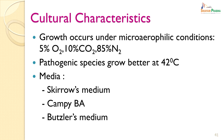Campylobacter does not believe too much of a good thing is good for it — it requires only 5 percent oxygen, while normal air has about 23 percent. You have to decrease the oxygen content in the environment for it to grow. It requires about 10 percent carbon dioxide, with the rest replaced by an inert gas such as nitrogen. Pathogenic species also grow better at 42 degrees centigrade. It requires specialized enriched media: the skirrow medium, campylobacter blood agar and blood cellar medium.